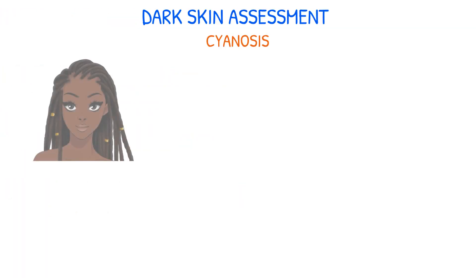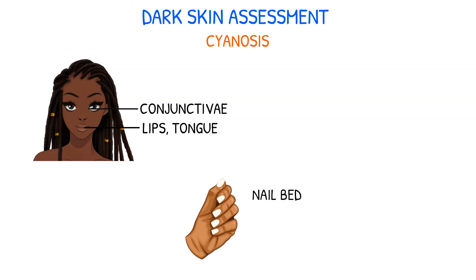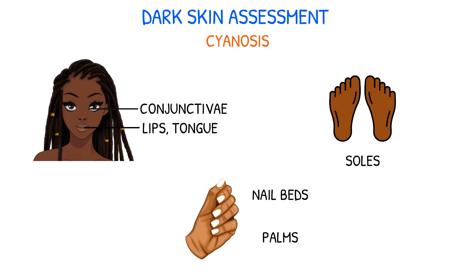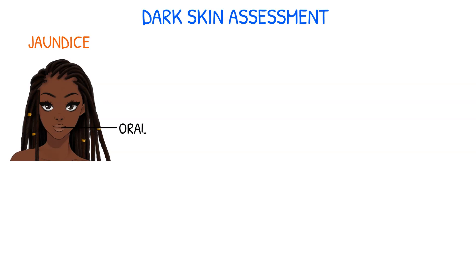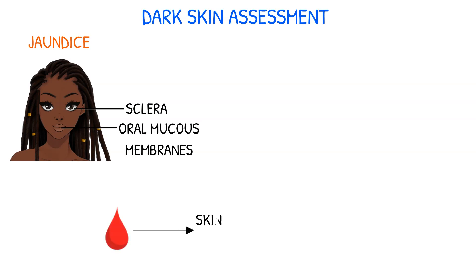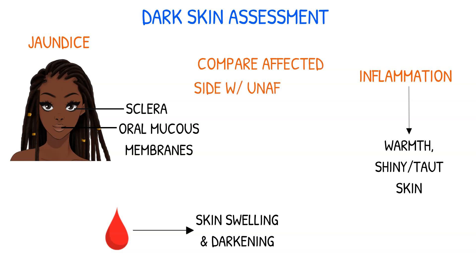To check for cyanosis, look at the lips, tongue, conjunctiva, nail beds, palms, and soles. For jaundice, check the oral mucous membranes and sclera. Bleeding can cause skin swelling and darkening. Inflammation can be detected by warmth, shiny, or taut skin. Compare the affected side with the unaffected side to assess for bleeding or inflammation.